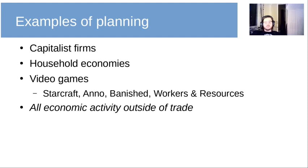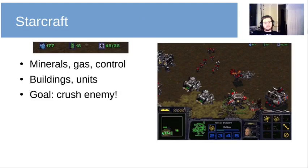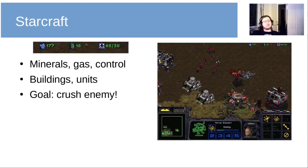To illustrate the video game point, I've put in some screenshots from some of these games. For Starcraft, we have three resources: mineral, gas and control. You need minerals and gas to build buildings, and you also need control to build units, which you build out of the buildings. The goal isn't profit — the goal is to crush the enemy.